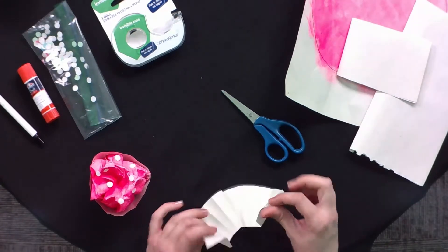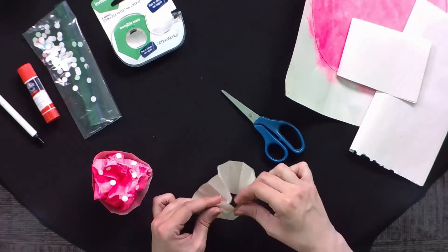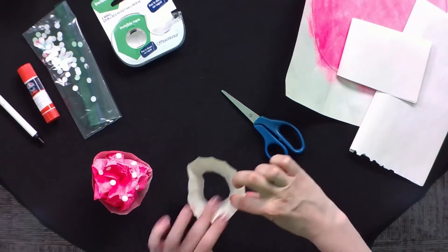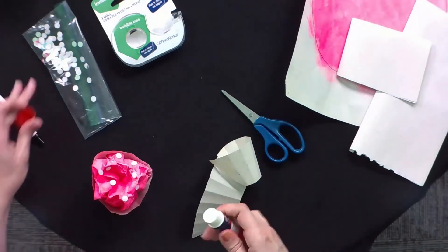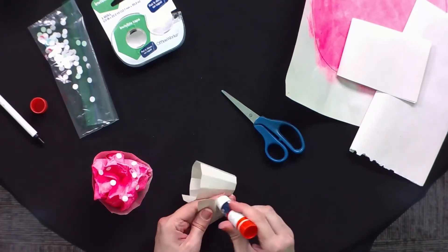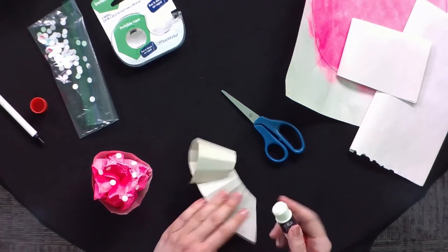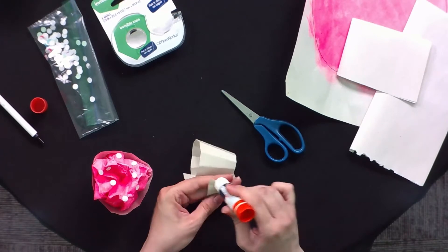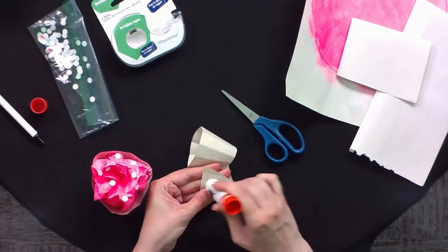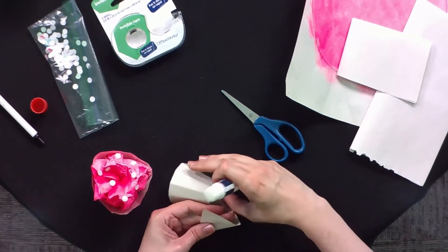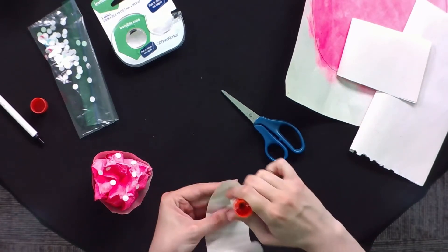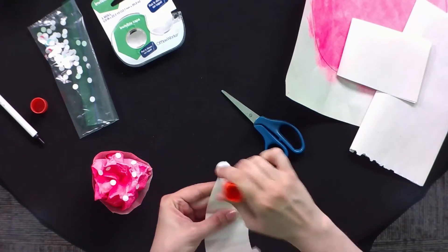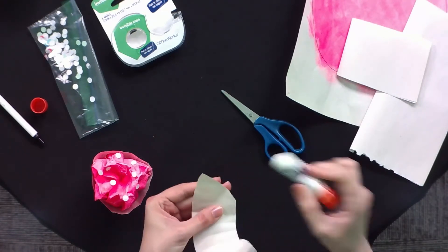And then once you have it open, you're going to take the edges and glue them together. So we're going to take our glue stick and we're going to put glue on both edges. We're going to put some over here on this side, and then we're also going to put some over on this side. It helps if they're both glued instead of just glue on one part of the paper.